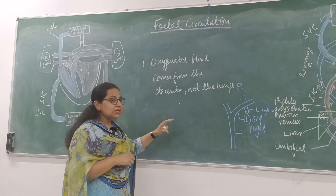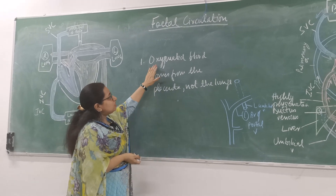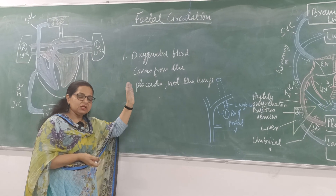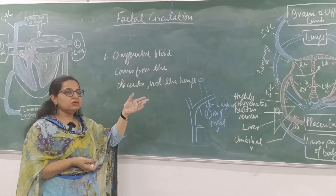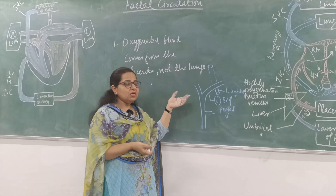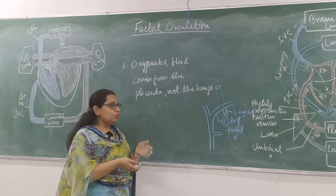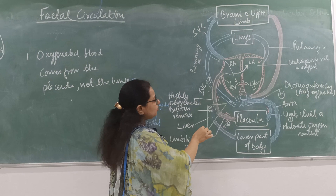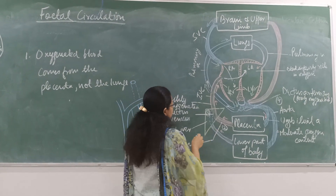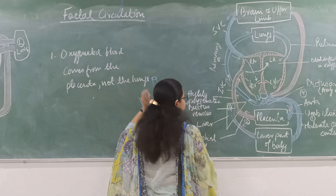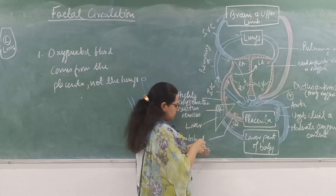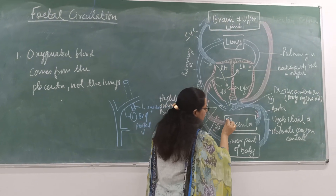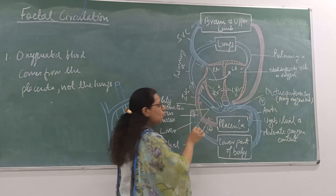The first thing you should know is that oxygenated blood comes from the placenta, not from the lungs. Whereas in adults, oxygenated blood comes from the lungs and there is no role of the placenta. But in fetal circulation, the placenta plays a very important role. As you can see in this diagram showing the fetal circulation, the placenta is the main stage in this whole fetal circulation.